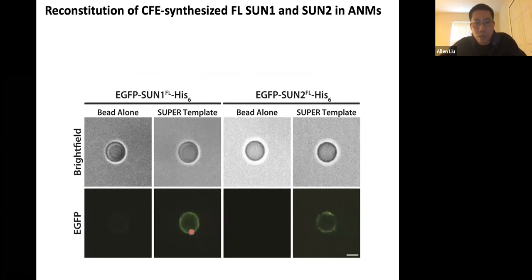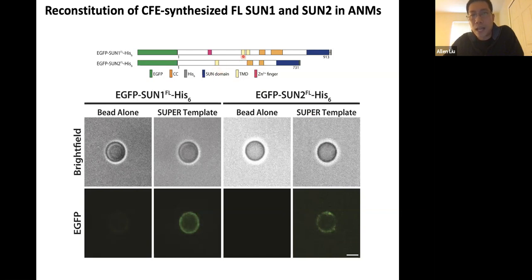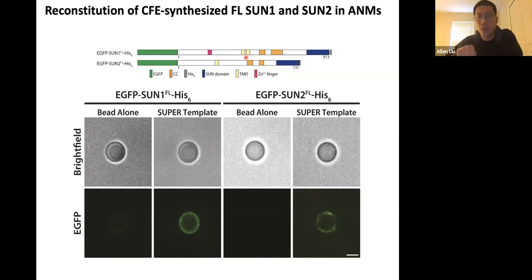We reconstituted SUN proteins into the membrane, showing GFP signal on the super template. If you don't have a membrane — just the bead itself — there's no GFP. We can reconstitute both full-length Sun1 and Sun2. Previously it was known that Sun1 has two transmembrane domains, which is peculiar because with two transmembrane domains, you can imagine the N and C termini must cross the inner nuclear membrane. Sun2 only has a single transmembrane domain. We wanted to explore the topology of these membrane proteins further.